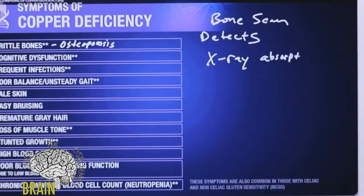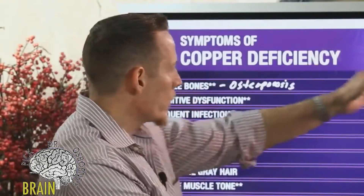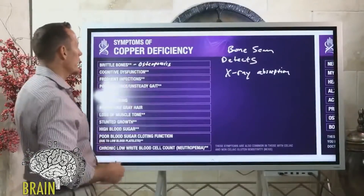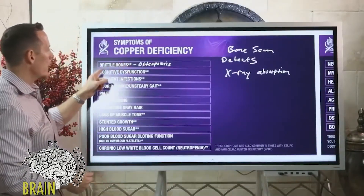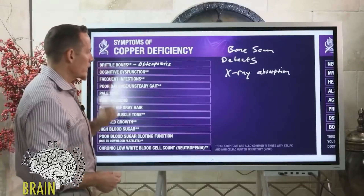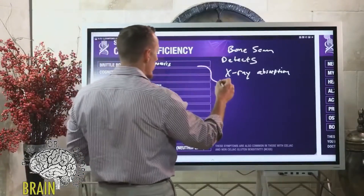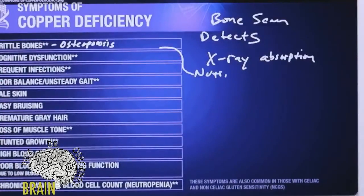A bone scan doesn't really tell you the quality of your bone — it's just telling you how well it's absorbing x-ray compared to a 35-year-old female. So it's not the greatest way to detect osteoporosis. There are several different things that can help you identify the quality of the bone, and one of them is to do a nutritional evaluation — asking your doctor to do a complete nutritional workup.